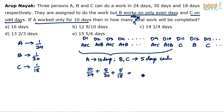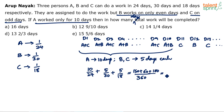Taking LCM of 24, 30, and 18, which is 360: A's contribution is 150/360, B's is 60/360, and C's is 100/360. Total work done in the first 10 days is 150 + 60 + 100 = 310/360, which simplifies to 31/36.